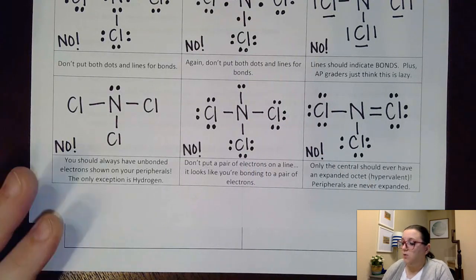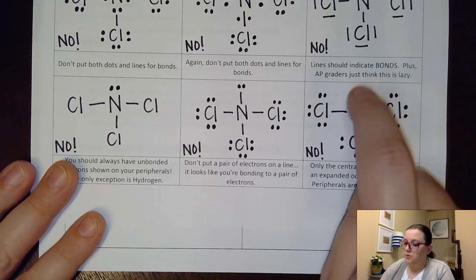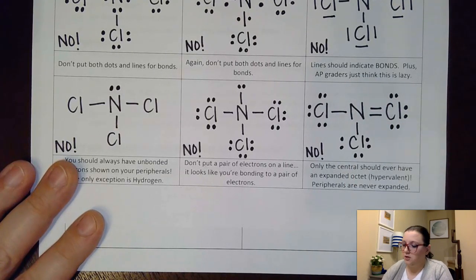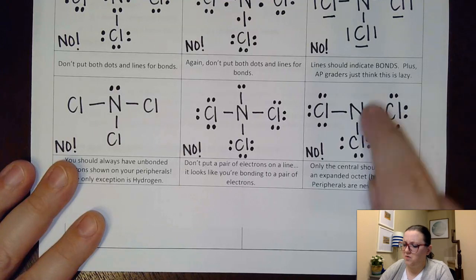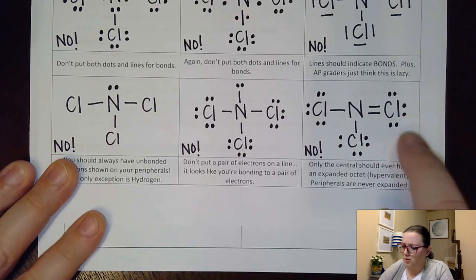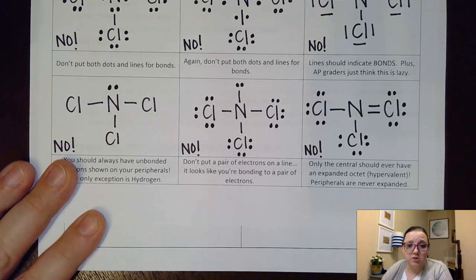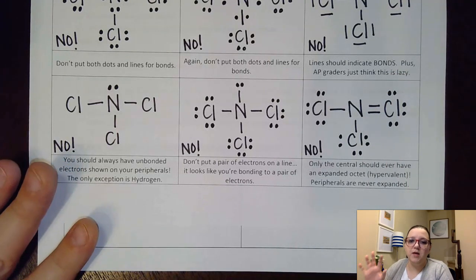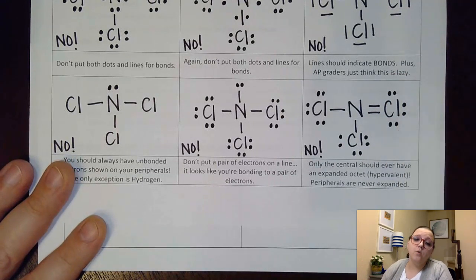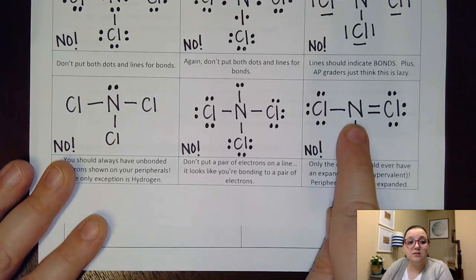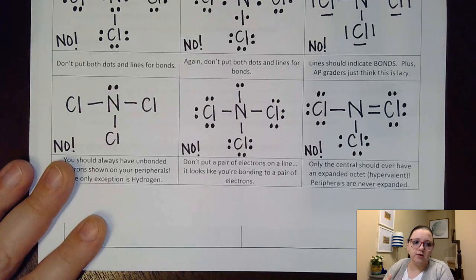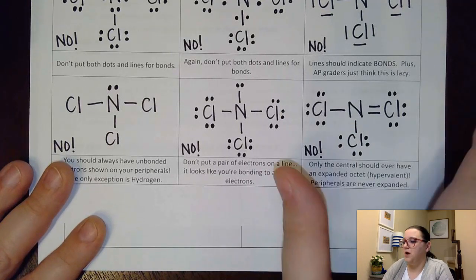Be careful not to put a line and then the dots for an unshared electron pair, because that line indicates a bond — it looks like you're showing a bond to a pair of electrons. Also, don't accidentally create a double bond where an unshared pair should be. For example, if you expand the octet of a peripheral chlorine to 10 electrons, that's wrong. Only the central atom can have an expanded octet, and only if it's in period three or later — nitrogen, for instance, is only in period two.